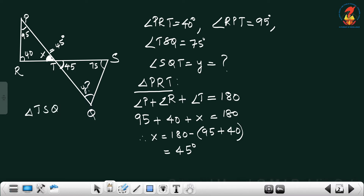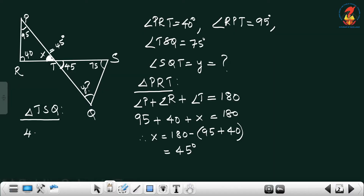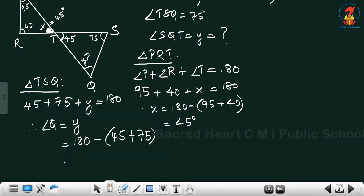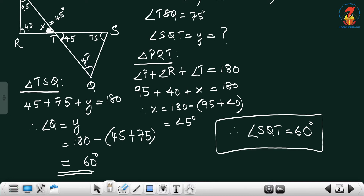Now consider triangle TSQ. Angle T is 45 and angle S is 75. Using the angle sum property: 45 plus 75 plus Y equals 180. Therefore, angle Q equals Y equals 180 minus 120, which equals 60 degrees. Therefore, angle SQT equals 60 degrees.